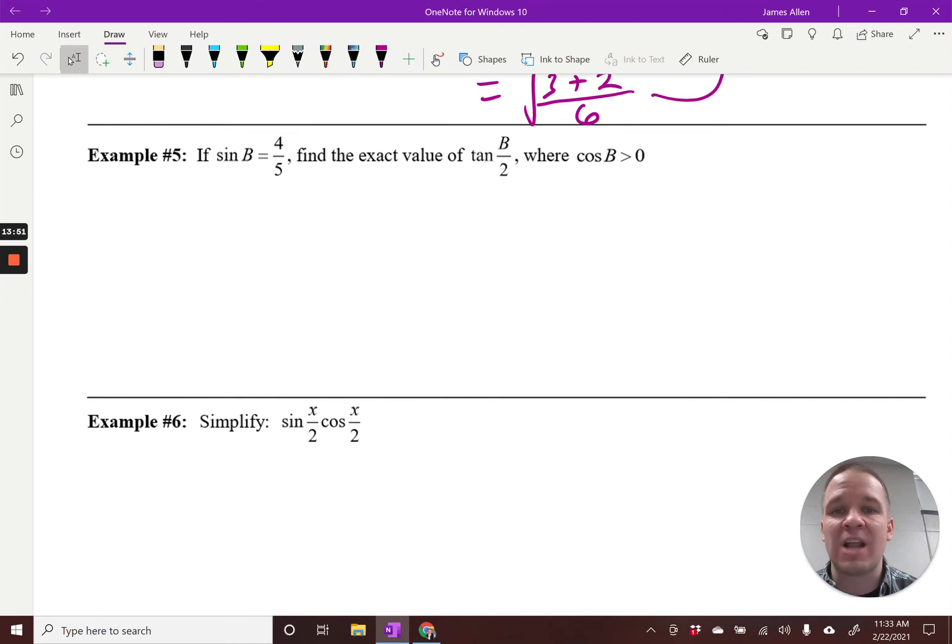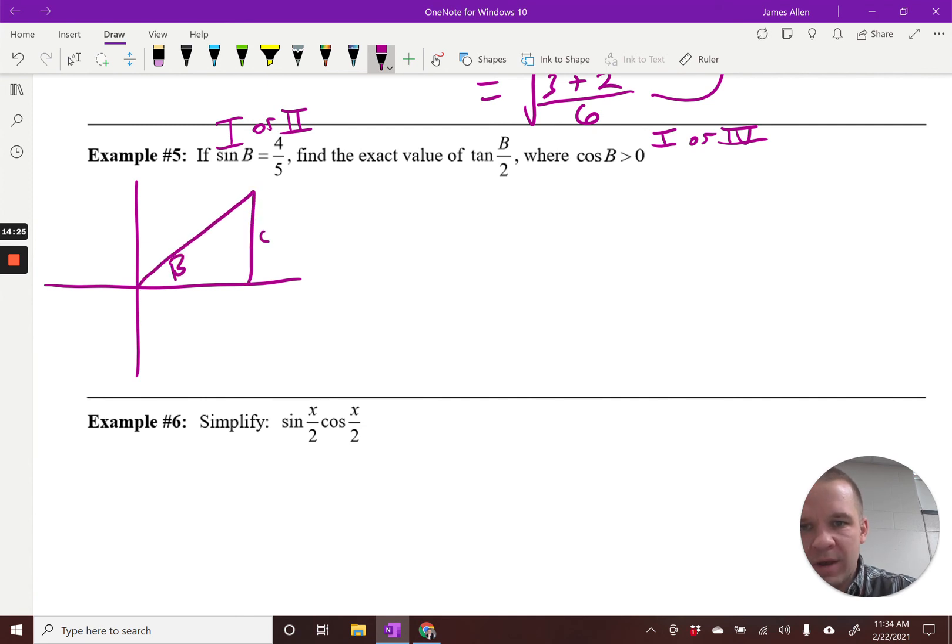So sine of b is 4 fifths. Find the exact value of tangent of b over 2, where cosine of b is greater than 0. Okay. So cosine of b is positive. So if both sine is positive, right? Sine is 4 fifths. So that means I could have that in either the first or the second quadrant, right? This is either 1 or 2. Cosine of b. Cosine is positive in either 1 or 4. So where is it located then? It's located in quadrant 1 for this one. So I can draw my triangle where I've got 4 and I've got 5, and that would be 3 for the last side there. Find the exact value of tangent of b over 2. Okay. So I've got my triangle. Now let's jot down our tangent half angle formula.